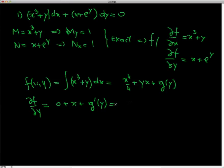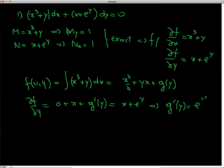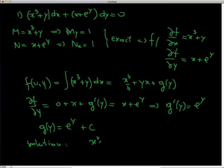Setting this equal to N = x + eʸ, we get g′(y) = eʸ, so integrating gives g(y) = eʸ + C. The implicit solution is f(x,y) = 0, that is: x⁴/4 + xy + eʸ + C = 0.